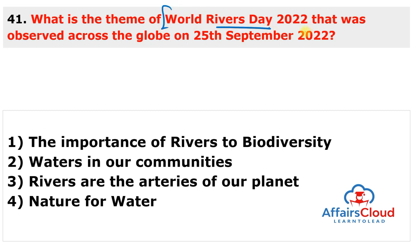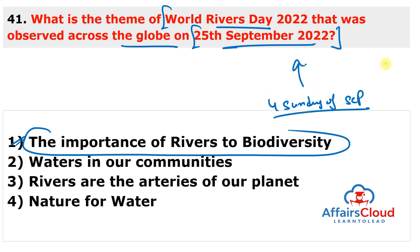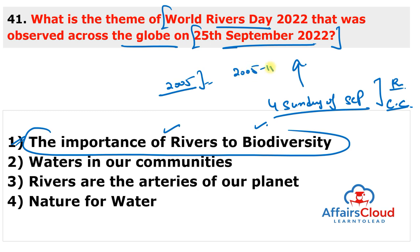World Rivers Day 2022 was observed on 25th September 2022 with the theme 'The Importance of Rivers to Biodiversity.' It is observed every year on the 4th Sunday of September, to promote awareness about the importance of rivers and the increasing threat posed by climate change. It was first observed in 2005, following the launch of the United Nations International Decade for Action: Water for Life 2005–15. World Rivers Day was initiated by Mark Angelo, a Canadian river conservationist.